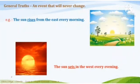An event that will never change — such events we can call general truth. For example: the sun rises from the east every morning. The sun sets in the west every evening. Both these sentences show a general truth that will never change.